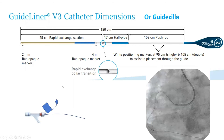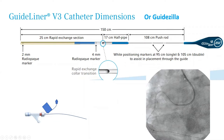Let me explain some of those devices. Guideliner — for first- and second-year fellows: what is a guideliner? Guideliner is a guide within a guide. This is a six French guide, and inside it you're advancing a five French guide. We call it a six French guideliner, but it's actually a five French guide to fit into a six French guide. It is a monorail guide — a 25 centimeter monorail that you advance over a wire in a monorail fashion like a balloon.